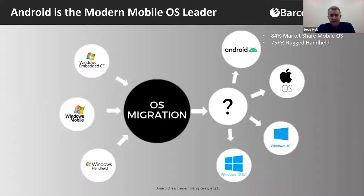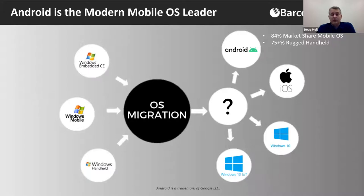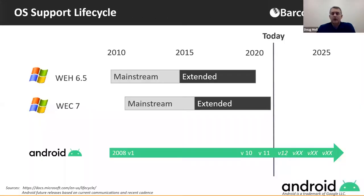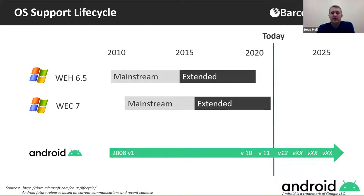iOS and Android dominated the consumer space, so rugged mobile device manufacturers had a choice. iOS, being a closed platform, was not a good option for a purpose-built rugged data collection device, so the market could either continue with Windows Embedded CE or invest in Android. In 2015, many considered Android immature from an enterprise perspective, but in 2021, Android has truly reached maturity and the time is up for Windows CE and Embedded.